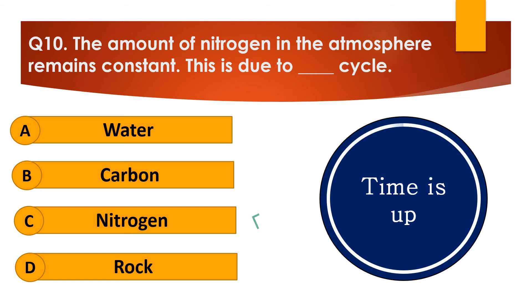Your time is up and the right answer is option C — Nitrogen. The amount of nitrogen in the atmosphere remains constant. This is due to the nitrogen cycle.